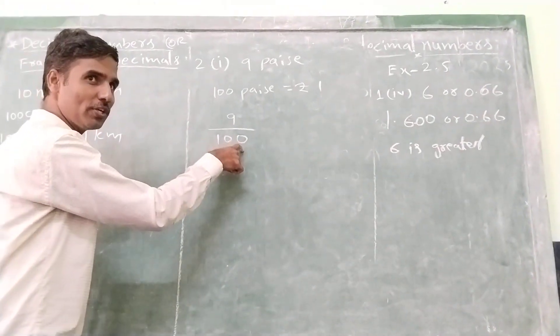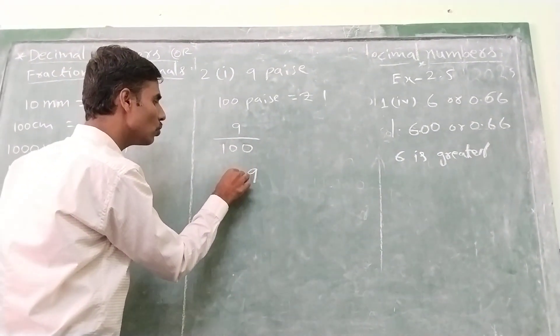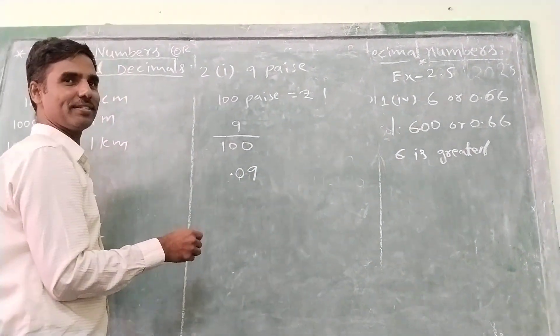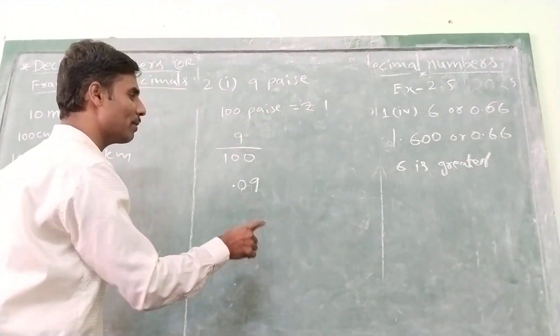Here there are 2 zeros in 100. So we count 1, 2 after the point. From right to left, 2 decimals after the point.